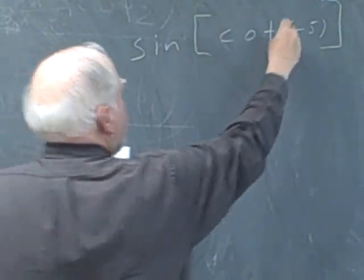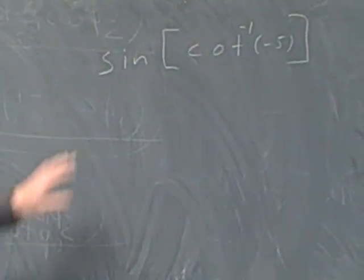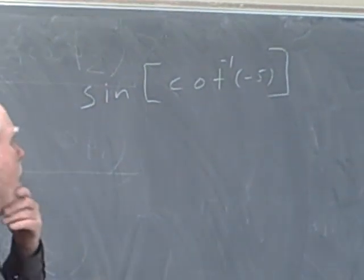It's sine inverse. Oh, I want cotangent inverse. I'm sorry. I want sine. That's what I really wanted to do. The sine of the cotangent inverse of negative 5.